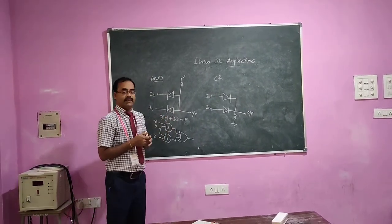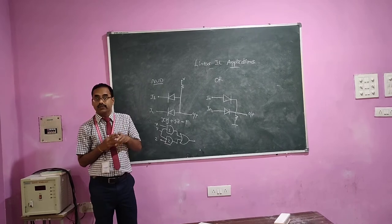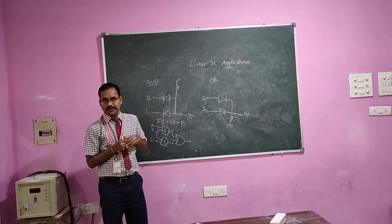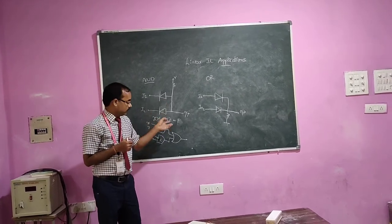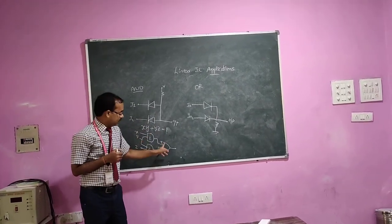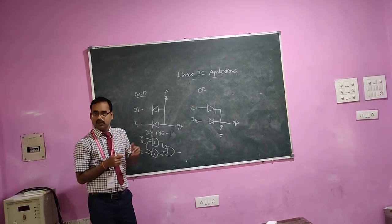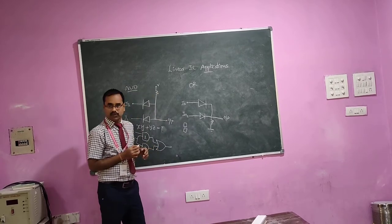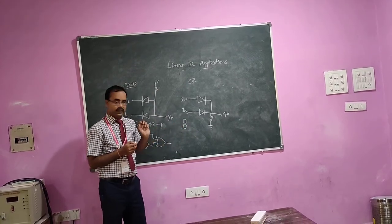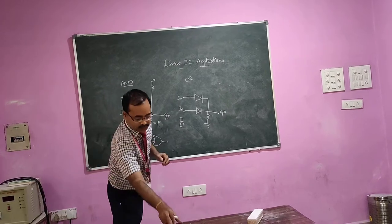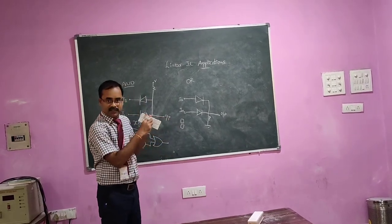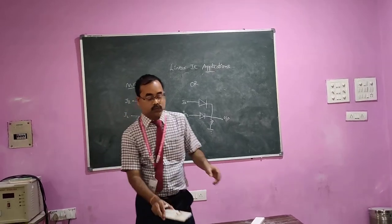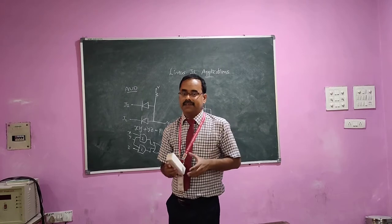Using ICs, we can realize circuits within a finite size. Because a single IC consists of more than one gate. So these two AND gates can be taken from a single IC, and this OR gate from another single IC. That means, within this much space, using just two ICs, I can realize this entire circuit. So all the disadvantages of discrete components can be minimized by using ICs.